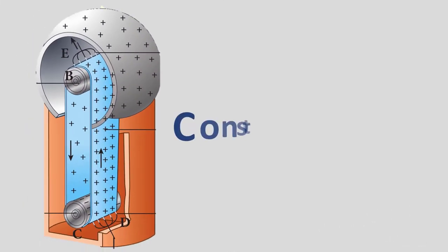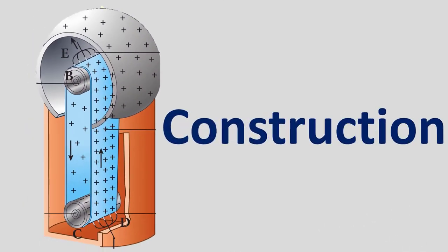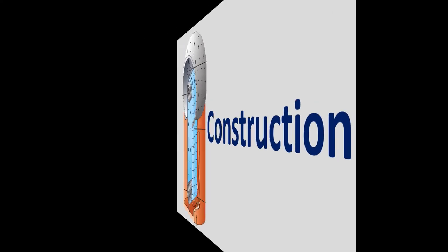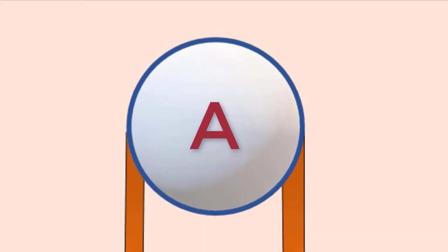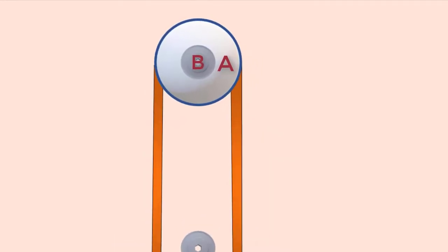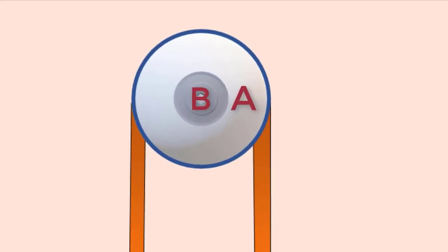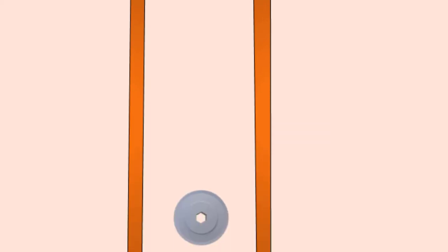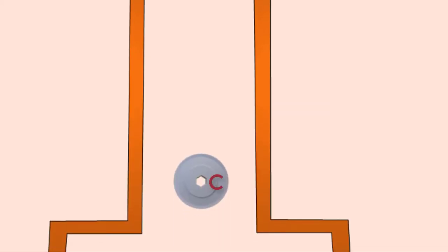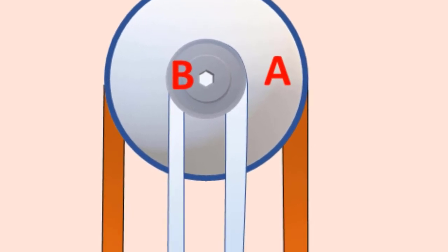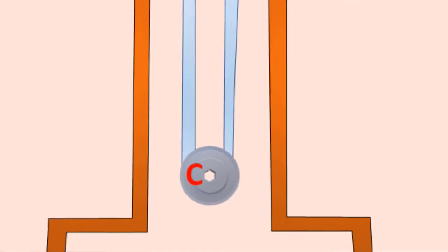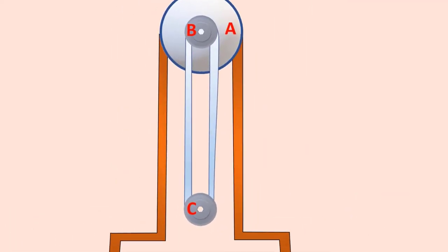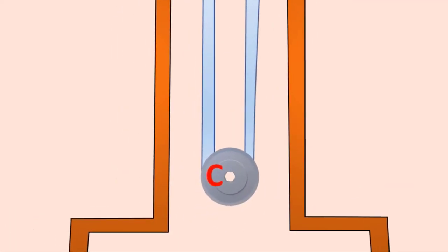Now, let us see the construction of Van de Graaff generator. A large hollow spherical conductor A is fixed on the insulating stand. A pulley B is mounted at the center of the hollow sphere, and another pulley C is fixed at the bottom. A belt made up of insulating materials like silk or rubber runs over both pulleys. The pulley C is driven continuously by the electric motor.